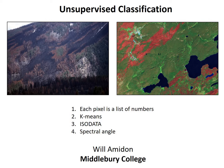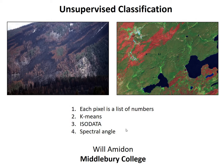Welcome everybody. In this video I'm going to give you an overview of unsupervised classification in remote sensing. The goal with classification is to go from an image — essentially a grid of numbers — and assign each pixel into some class to make a meaningful map. We'll talk about how to visualize each pixel as a list of numbers and use algorithms to classify those as similar or different, specifically the k-means algorithm, ISO data, and spectral angle classification.